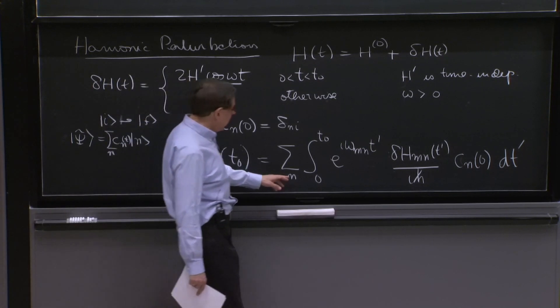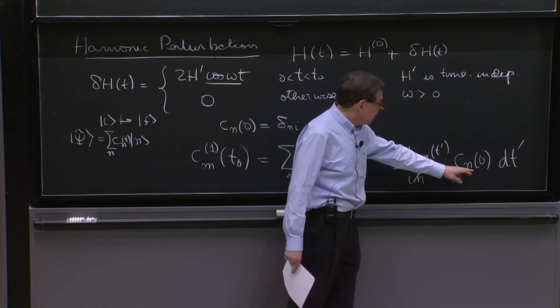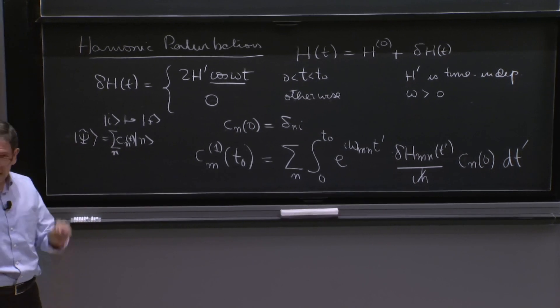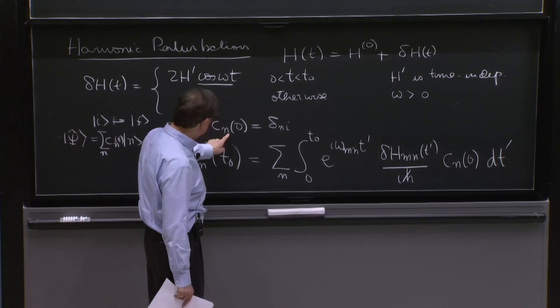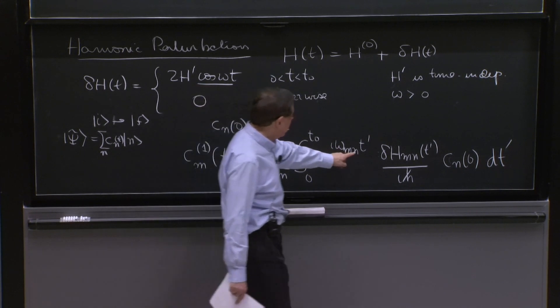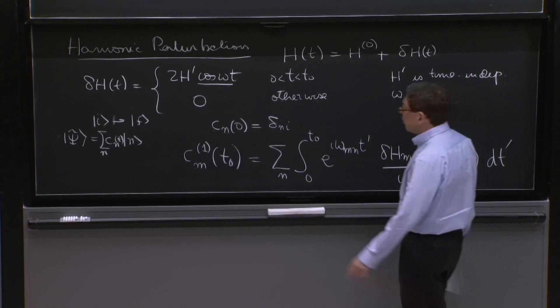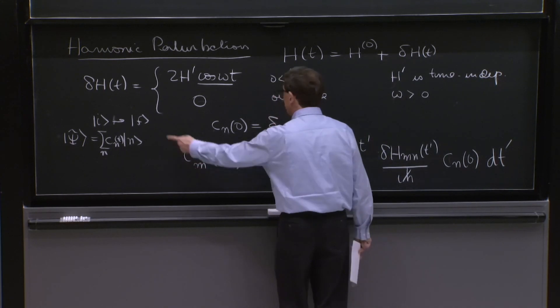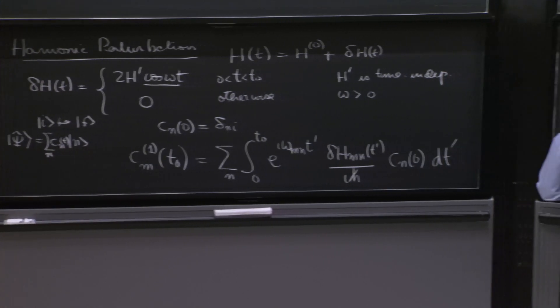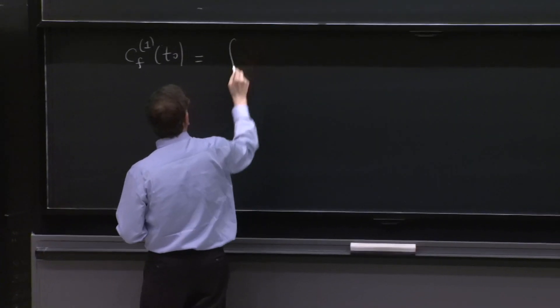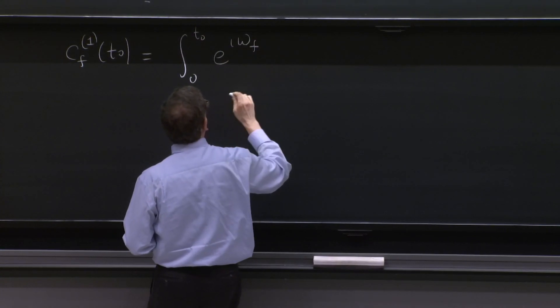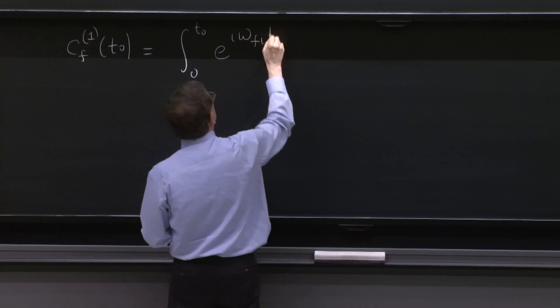And it depends on where you started on. That's why the sum over n here with initial states. But this sum is going to collapse because we know we start with a state i. So when we substitute cn equal to this, the sum only works when n is equal to i. So we'll put for n i's. And of course, we're going to also take for the final state to be f. So the formula now reads cf1 at t0 is equal to the integral from 0 to t0 e to the i omega f, m was f, i t prime.